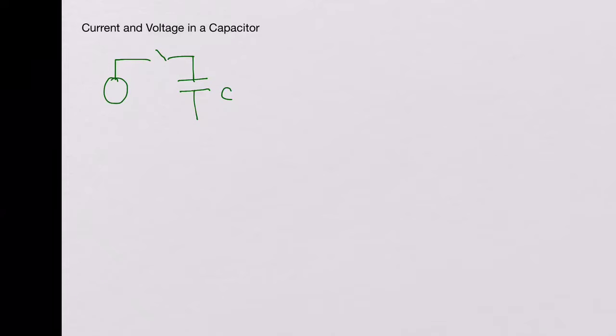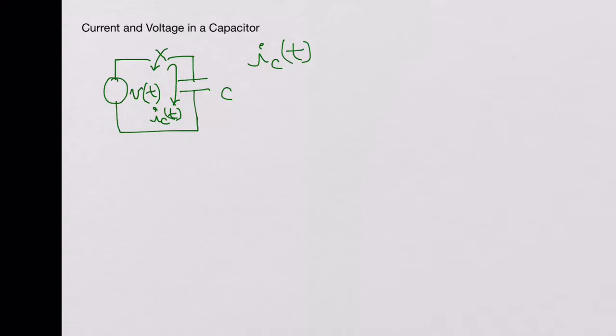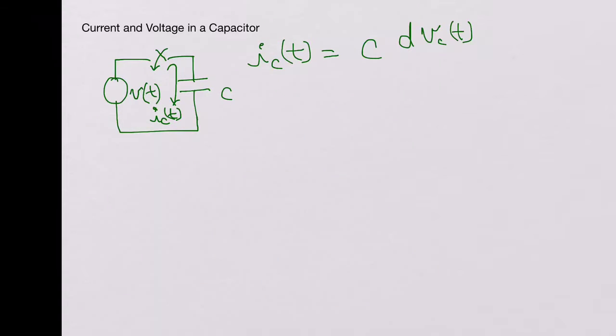Welcome to EE Know-How. In this video we will look at the current and voltage in a capacitor. If you take a capacitor whose capacitance is C and connect it across a voltage source which generates a voltage V of T, then you close the switch, there would be a current flowing through this capacitor which is IC of T. IC of T is equal to C times dVC(T) over dt.